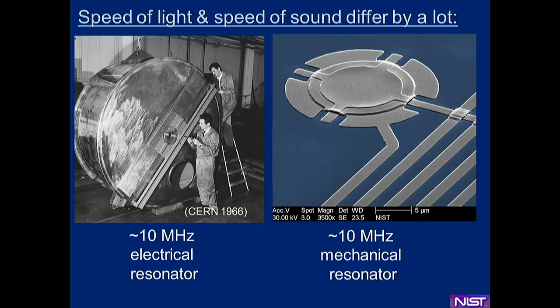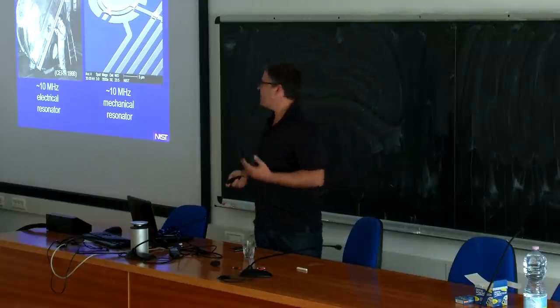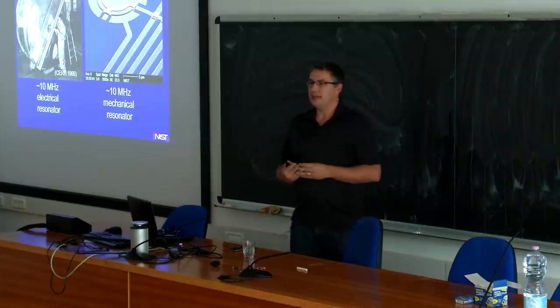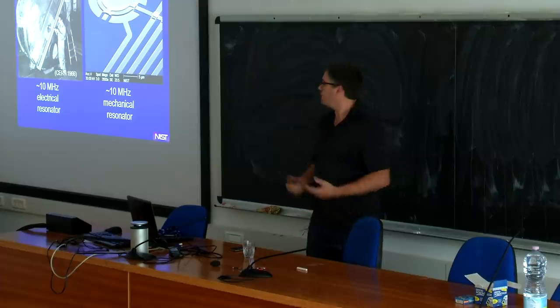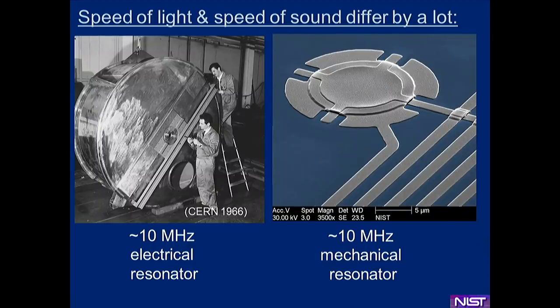For example, a 10 MHz oscillator as an electromagnetic cavity would have a size of about a meter—a beautiful picture from CERN in the 1960s of a ~19 MHz cavity resonator with a pillbox shape about the size of a person. That scale is just set by the wavelength of 10 MHz and the speed of light. In contrast, one of our mechanical oscillators vibrating at about 10 MHz has a characteristic length of about 10 microns—illustrating the broad difference between mechanical and electromagnetic wavelength scales.